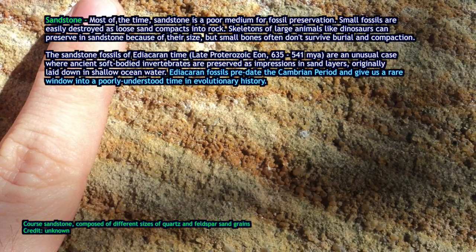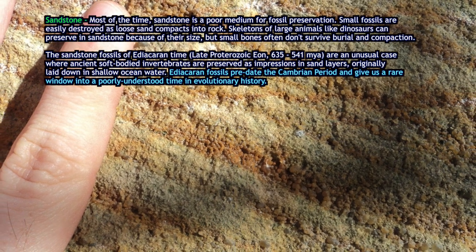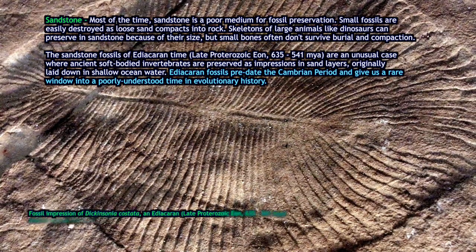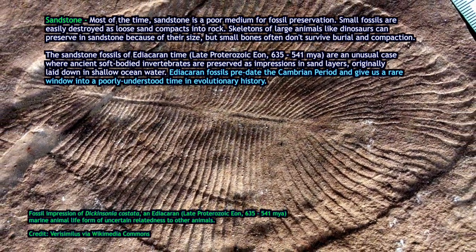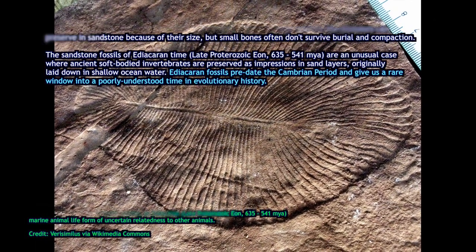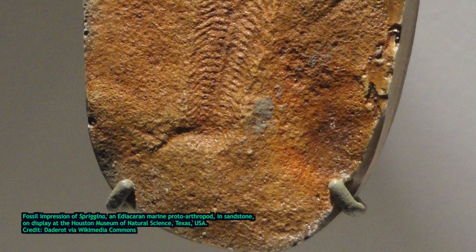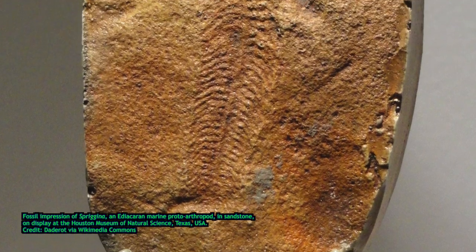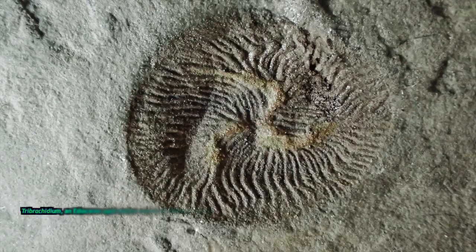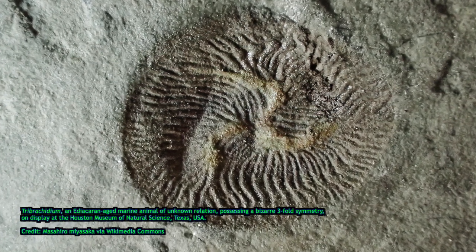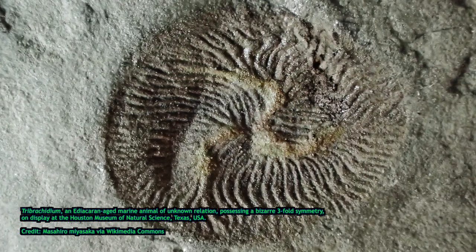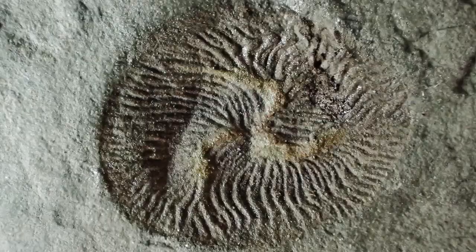Sandstone is not typically very good for fossil preservation because the grains are so coarse that as the material compacts, it tends to destroy most remains of ancient life forms. But there are some exceptions — most famously, the sandstones of the Ediacaran Hills of Australia. A fairly fine-grained sandstone has managed, under unusual conditions, to preserve the impressions of ancient life forms that lived at the time. This is important because the Ediacaran sandstones were laid down before the Cambrian, before there were large fossils of animals with hard parts. So the Ediacaran fossils are impressions of soft-bodied organisms — some of the strangest, most unusual types of life forms ever to exist on Earth, and many are unclassifiable into any other known animal group.